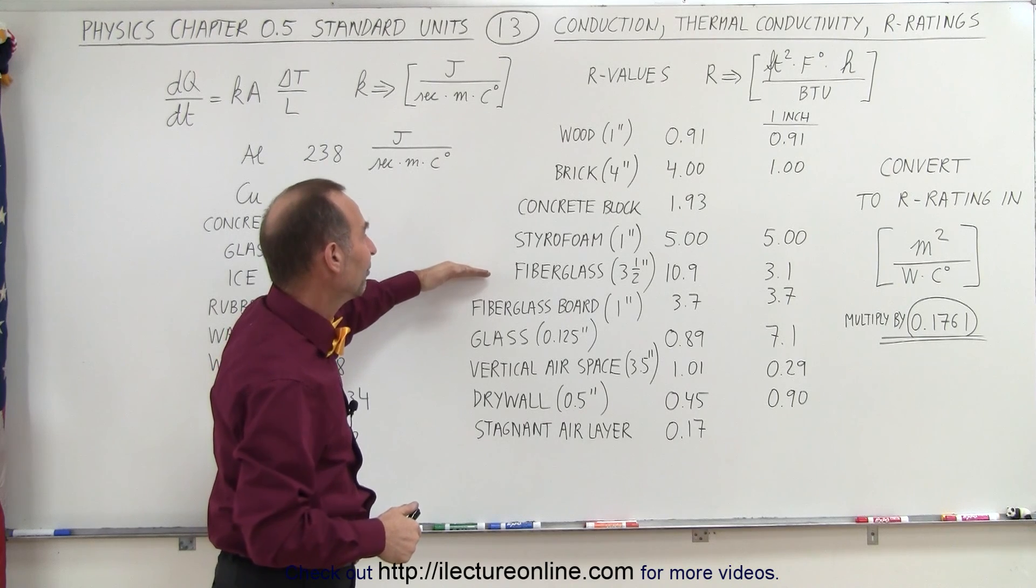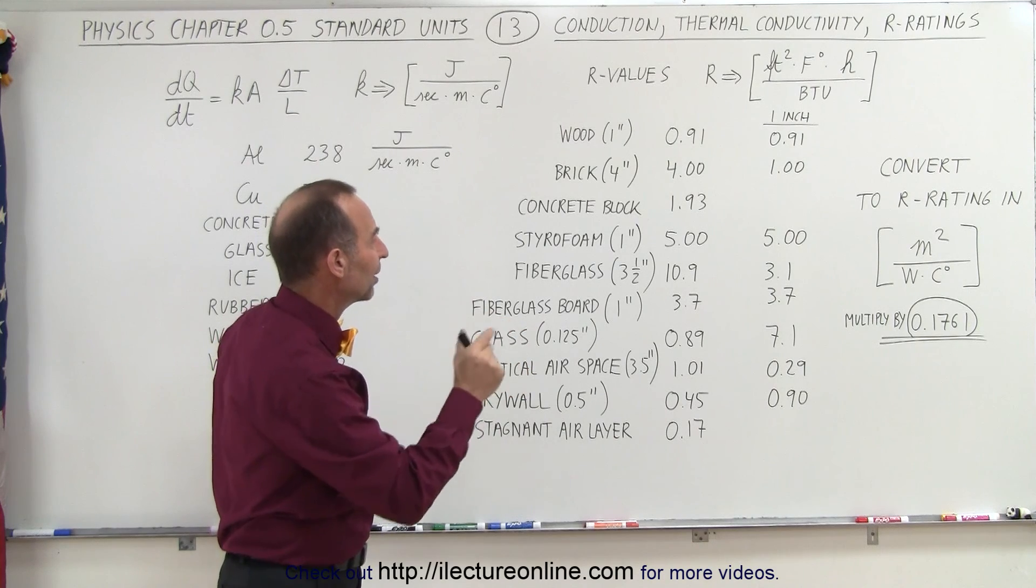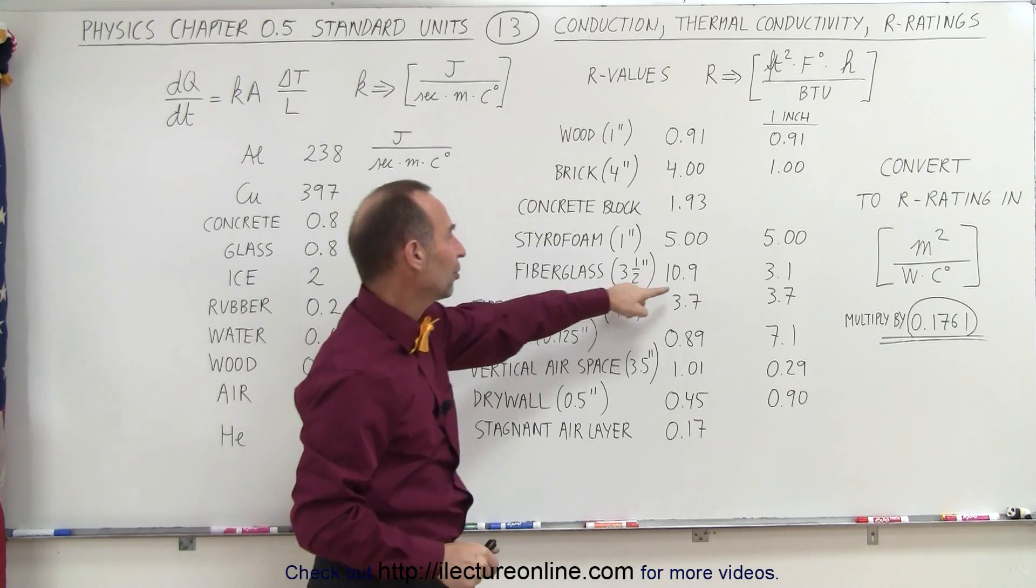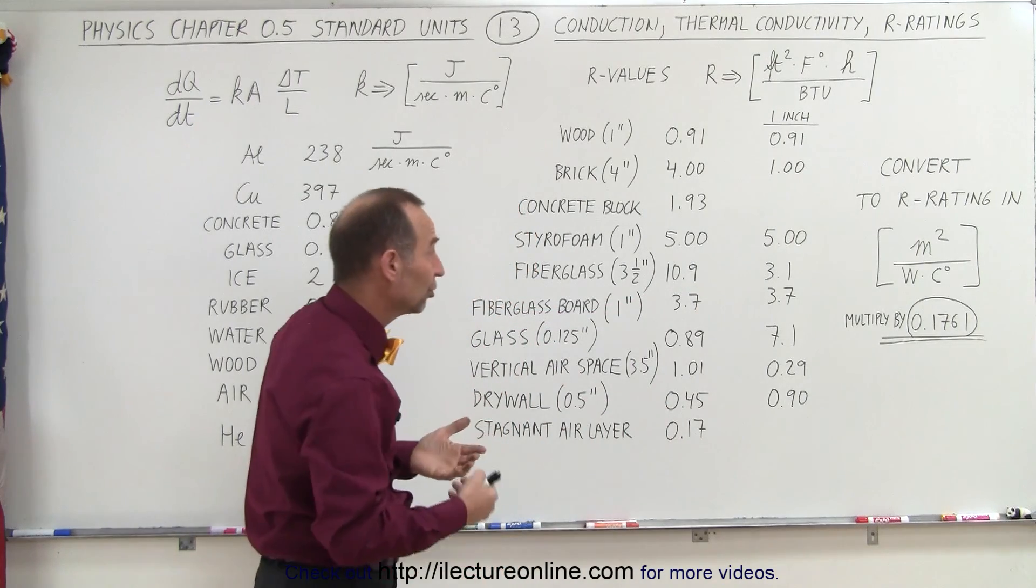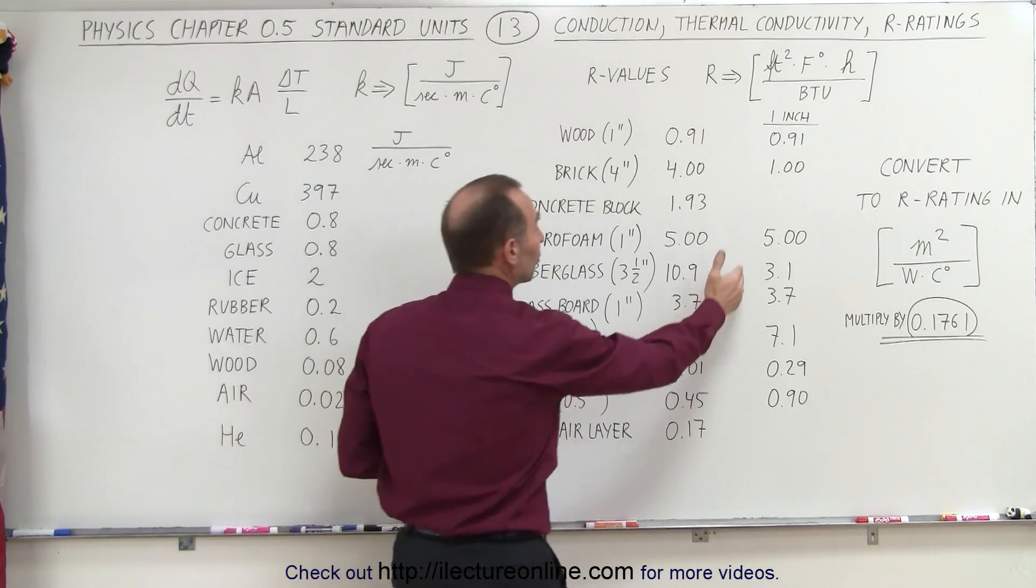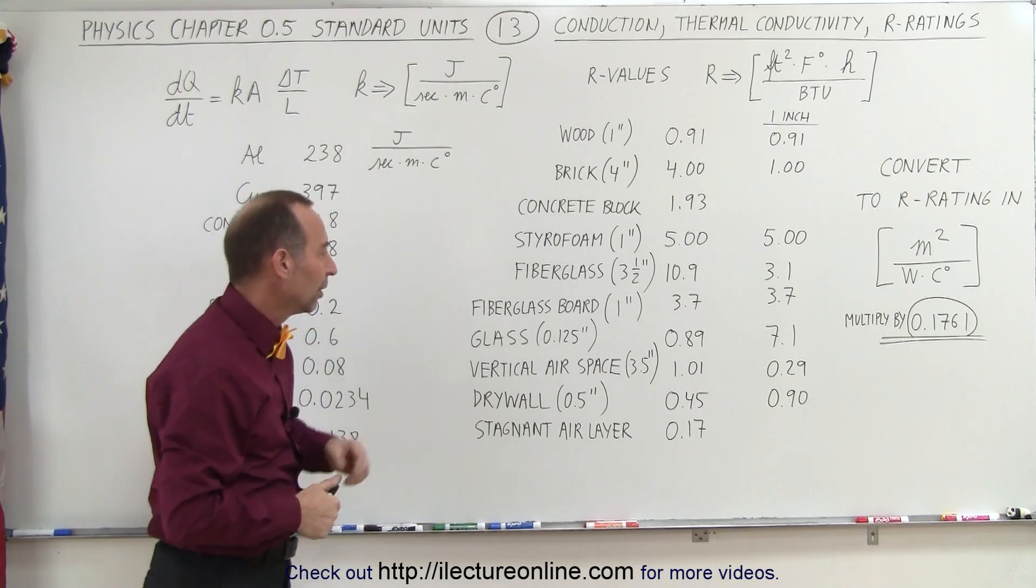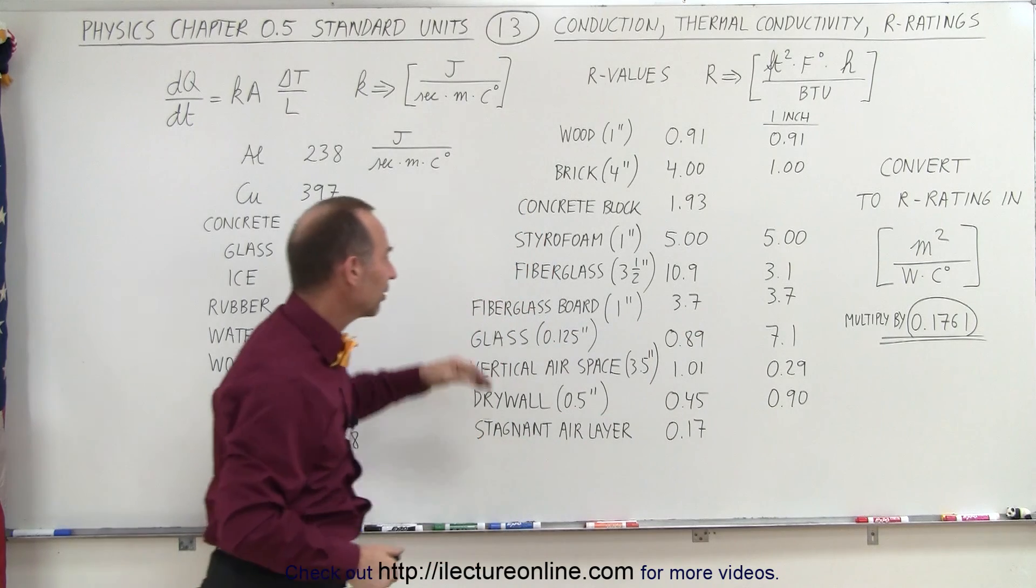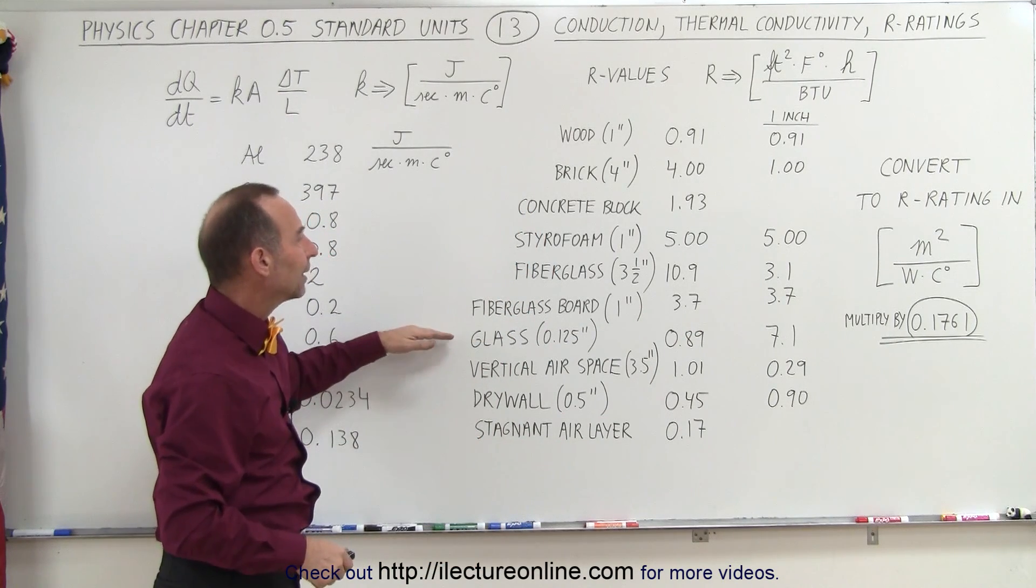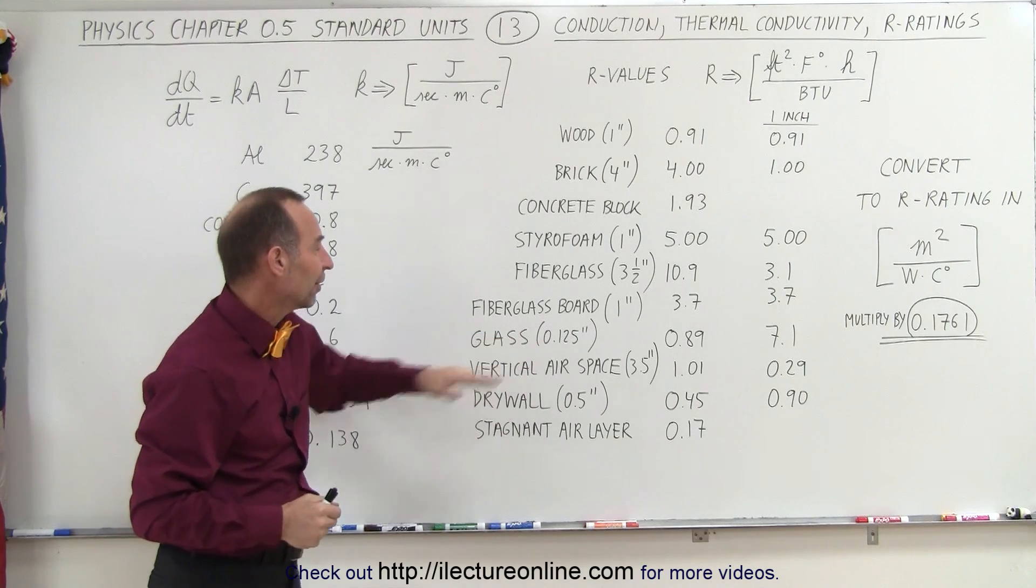We use fiberglass in walls to insulate. Notice a three and a half inch thick batting of fiberglass has an R rating of 10.9, which is 3.1 per inch—really good. Not quite as good as styrofoam, but much better to use as a building material. We also use fiberglass board, which has a slightly better rating per inch. Glass also has a very good rating, but typically glass sheets are not very thick.